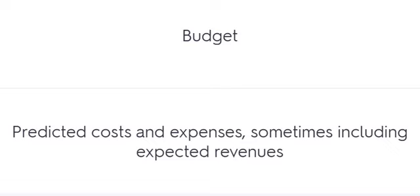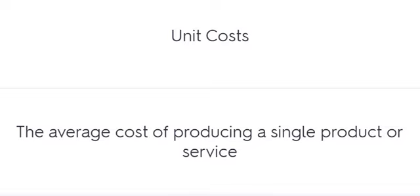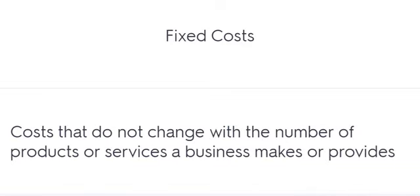Budget: predicted costs and expenses, sometimes including expected revenues. Financial Backer: an investor who provides money for the business. Unit Costs: the average cost of producing a single product or service. Fixed Costs: costs that do not change with the number of products or services a business makes or provides.